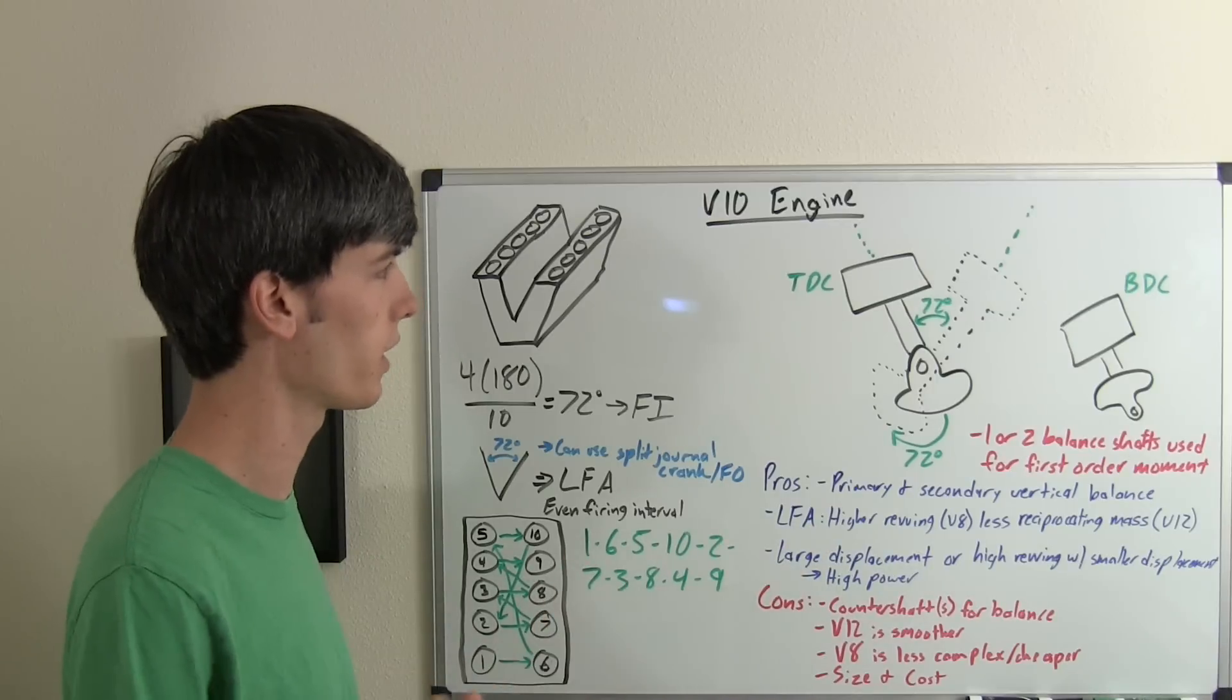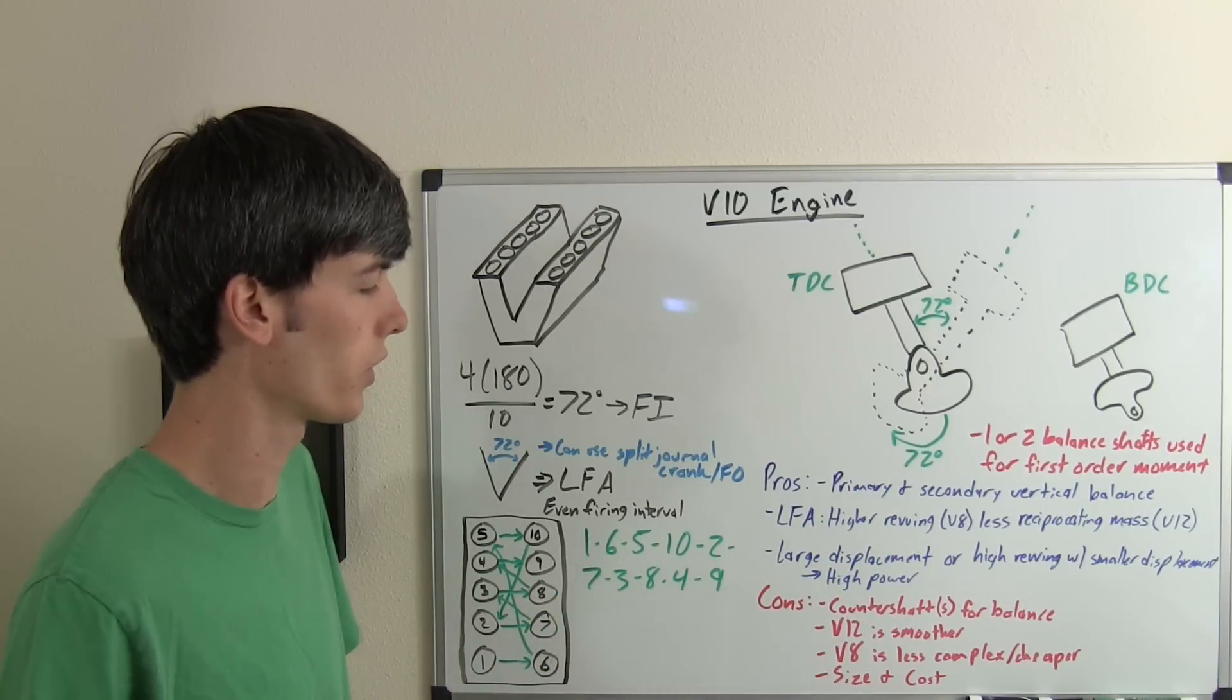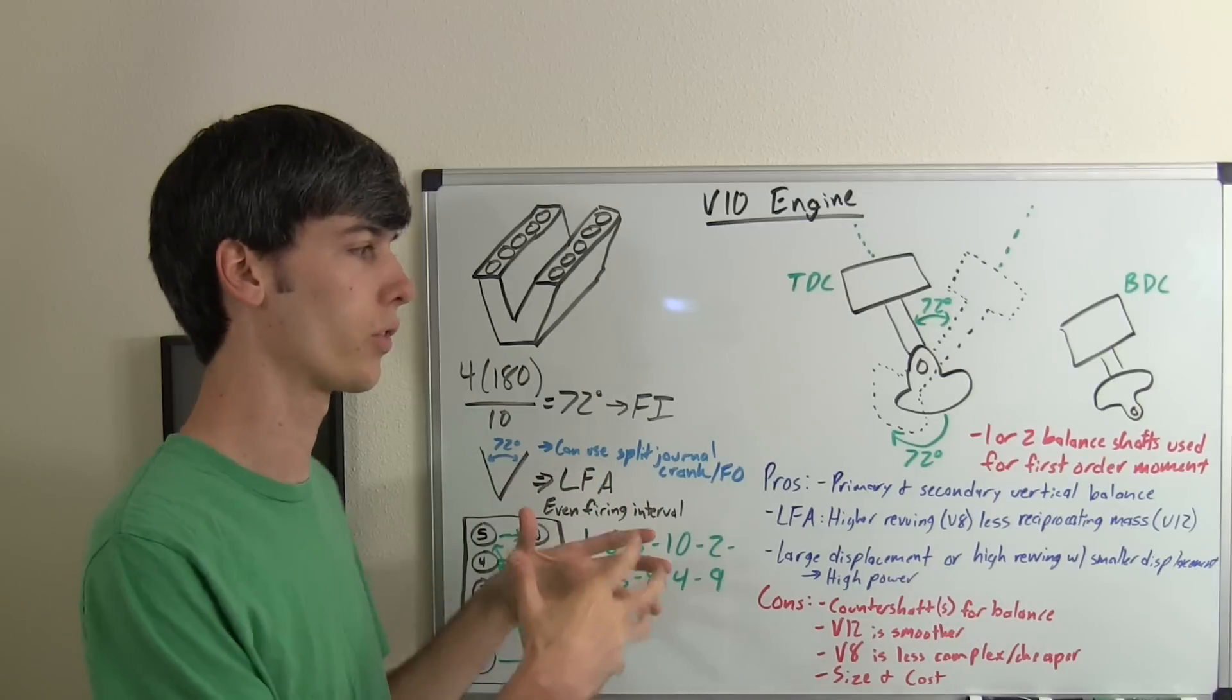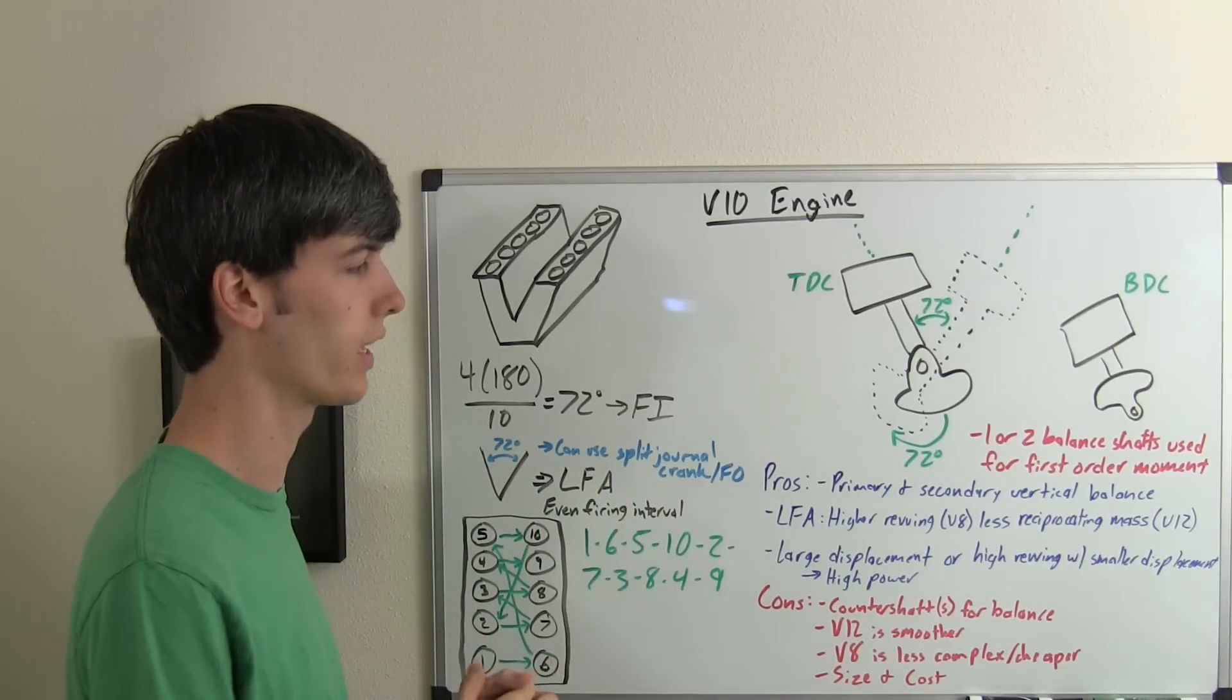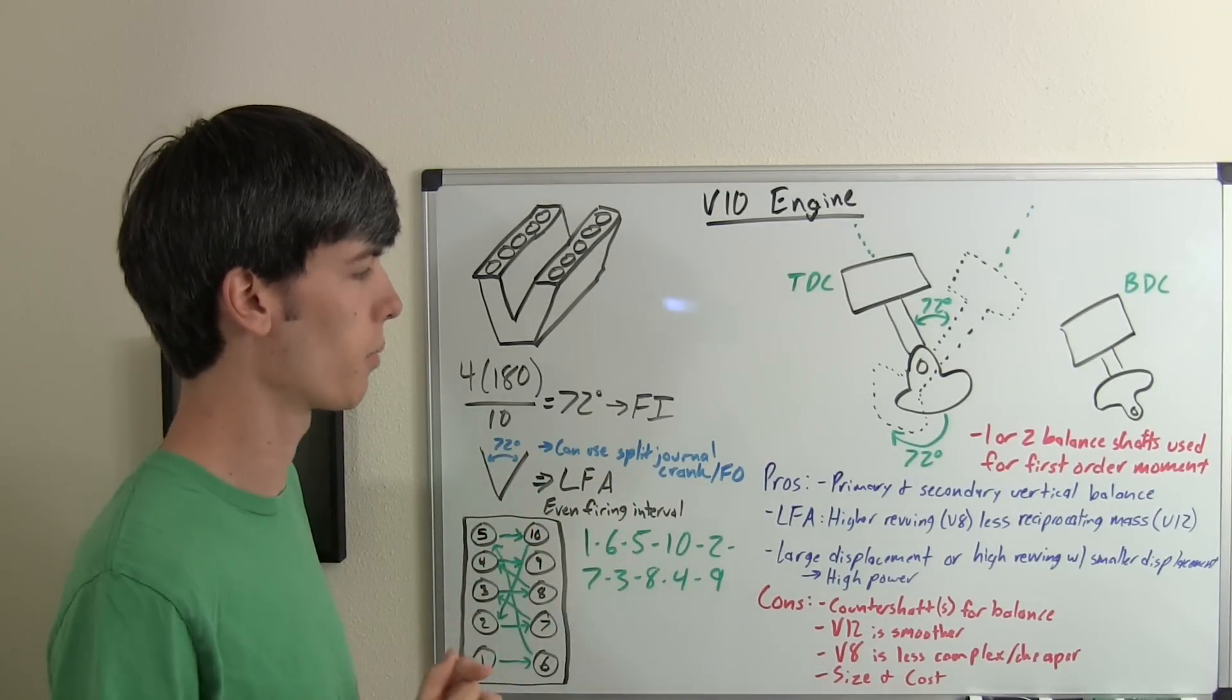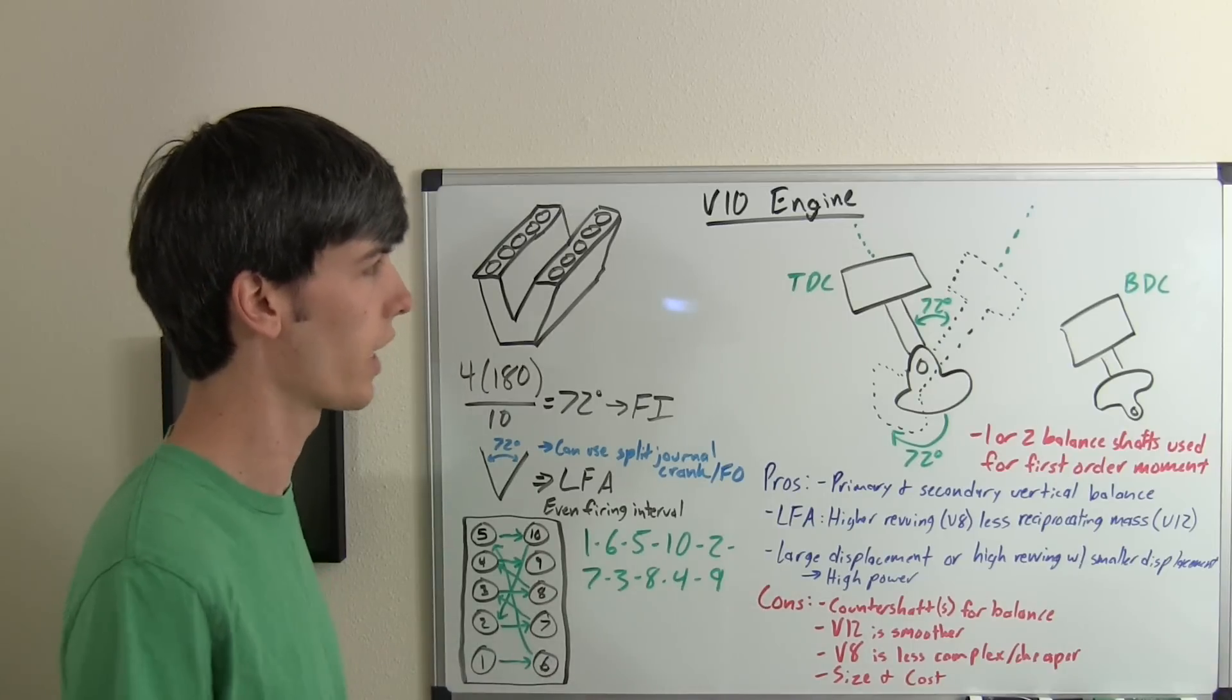Also, you can have larger displacement in a V10 engine than smaller cylinder counts. And if you want to use smaller displacement in a V10 engine, you can have it rev higher with that less rotational inertia and smaller pistons. So either way, you can have more power with more cylinders like this.